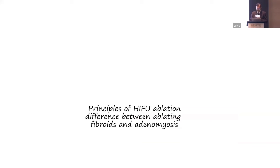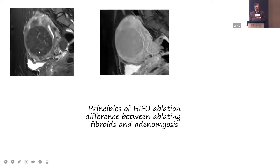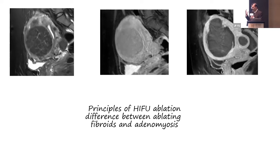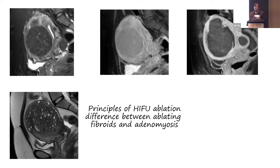What are the principles of HIFU ablation? Ablating fibroids is different from ablating adenomyosis. A fibroid has a nice round capsule, visible on contrast MRI, and the energy can be contained within it — we can achieve 70, 80, sometimes 100% ablation. But adenomyosis is all over the place with no capsule. You have to worry about the serosa and the endometrium. It is not as straightforward, and very, very challenging.